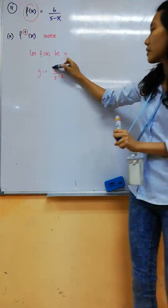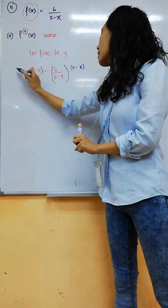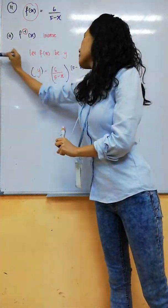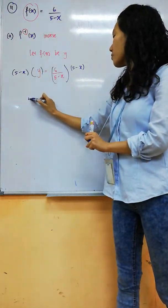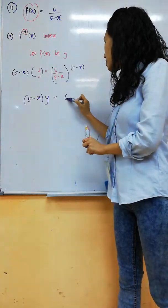Correct. Times 5 minus x on the right, times 5 minus x on the left. So 5 minus x times y equals to 6.